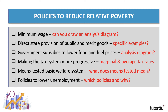For revision, if you get a question on policies to reduce relative poverty involving a minimum wage, can you draw an analysis diagram? If you're talking about the direct state provision of key public and merit goods, can you give specific examples? Public goods: improved law and order, better infrastructure. Merit goods: education and healthcare. Government subsidies - can you draw an analysis diagram to show the effect of a subsidy? With the tax system making it more progressive, that involves increasing both the marginal and the average rate of tax as income goes up. Which countries have done that? And which policies do you think would be most effective in bringing down unemployment and helping people generate higher incomes, and why?